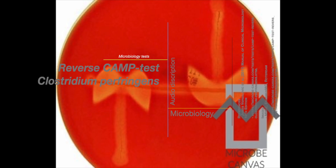To perform the test, a CAMP-positive S. agalactiae strain is streaked down the center of a sheep blood agar plate. C. perfringens is then streaked perpendicular to the S. agalactiae without touching it. After aerobic incubation at 37 degrees Celsius for 24 to 48 hours, a narrow arrowhead of enhanced hemolysis will be visible at the junction of the two streaks, if C. perfringens is present.